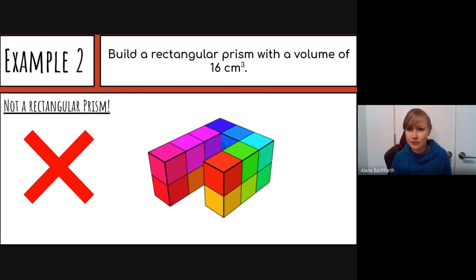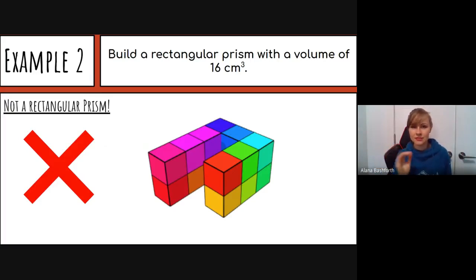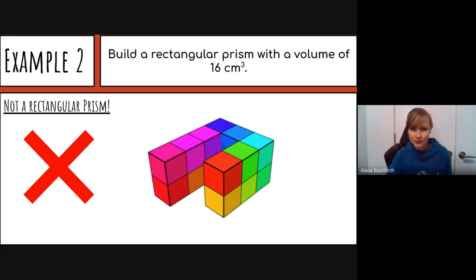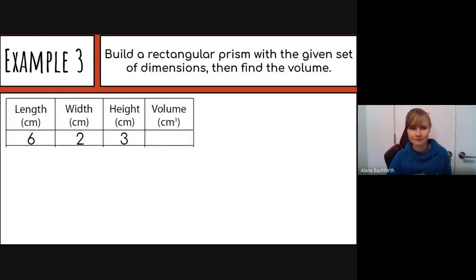I also want to show a non-example: this is not a rectangular prism because it does not have six sides that are all rectangles — it has more sides than that. We're only working with rectangular prisms today.